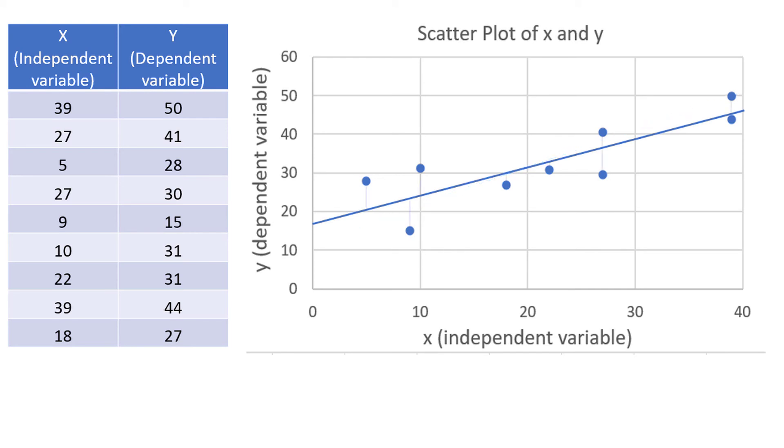If we focus on just one line, we can measure the vertical distance from each point to the line. For a few reasons, including canceling the negative signs, we actually take the squared distance. The line with the smallest total squared distance is the winner, at least according to mathematics.